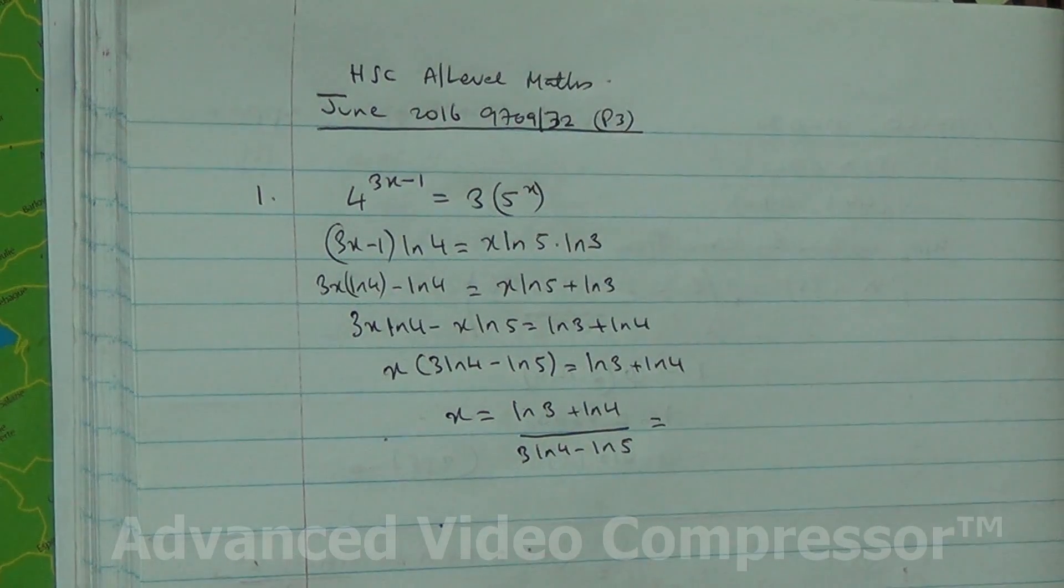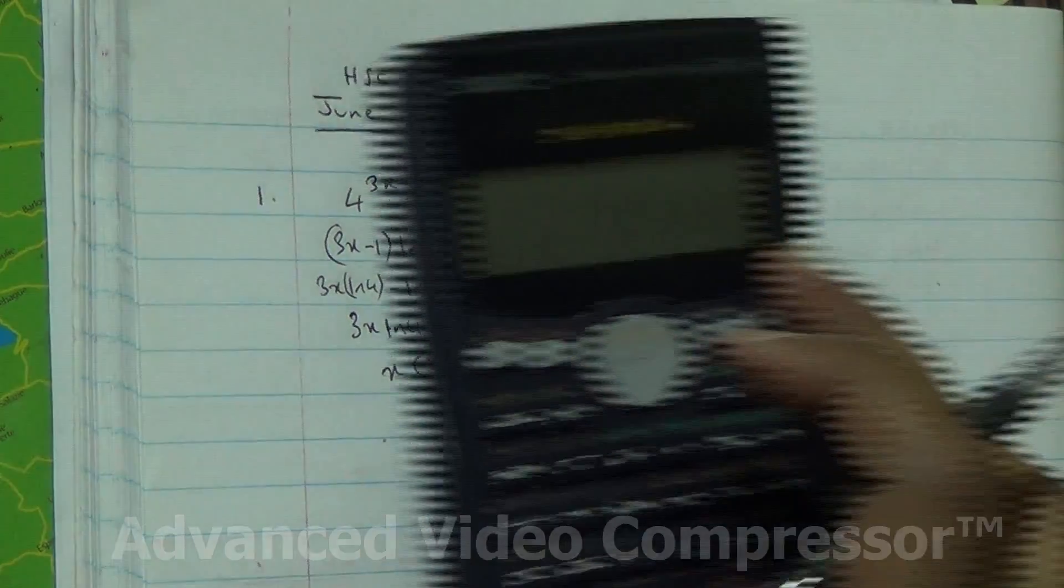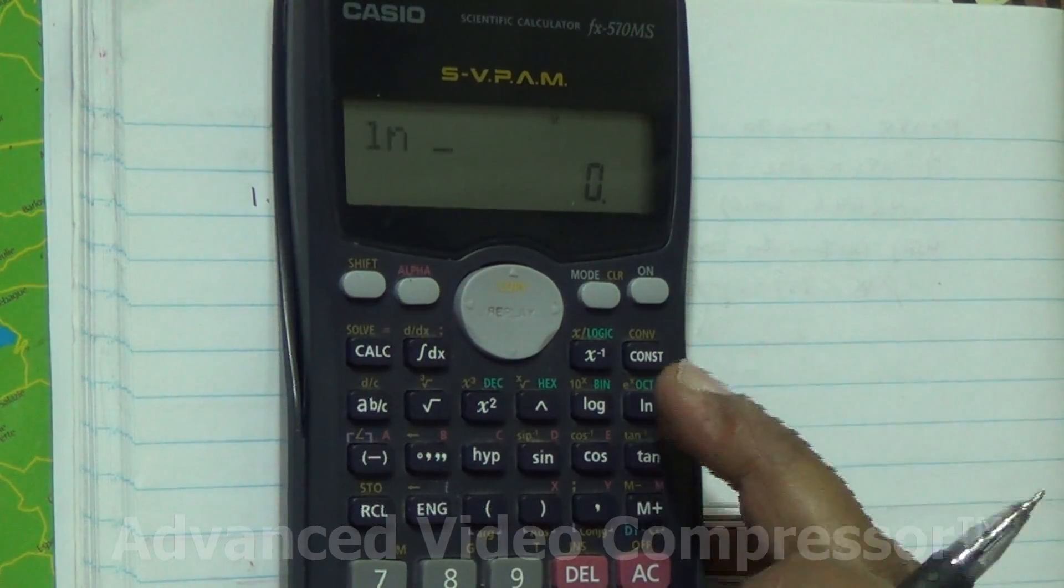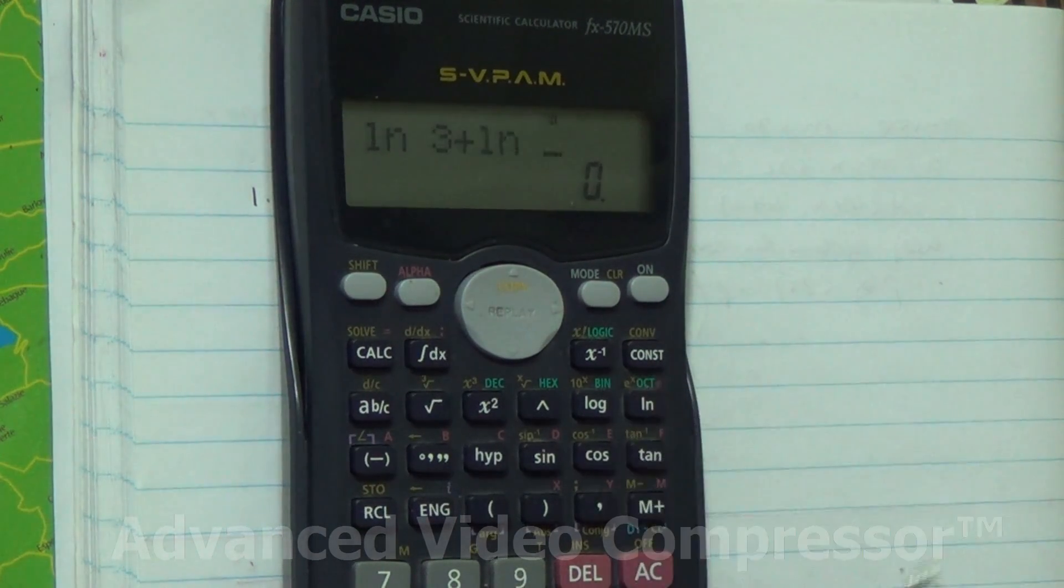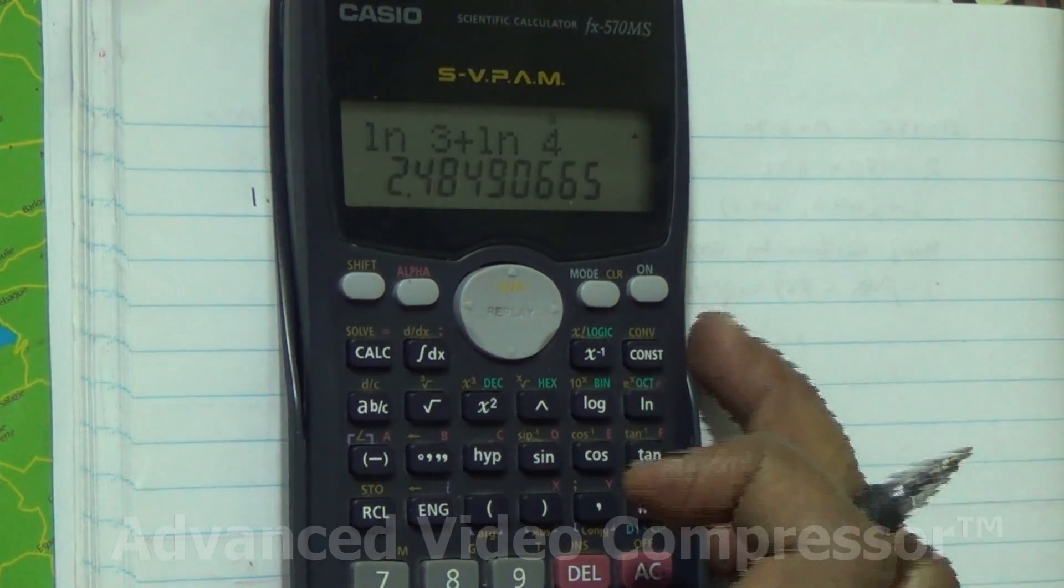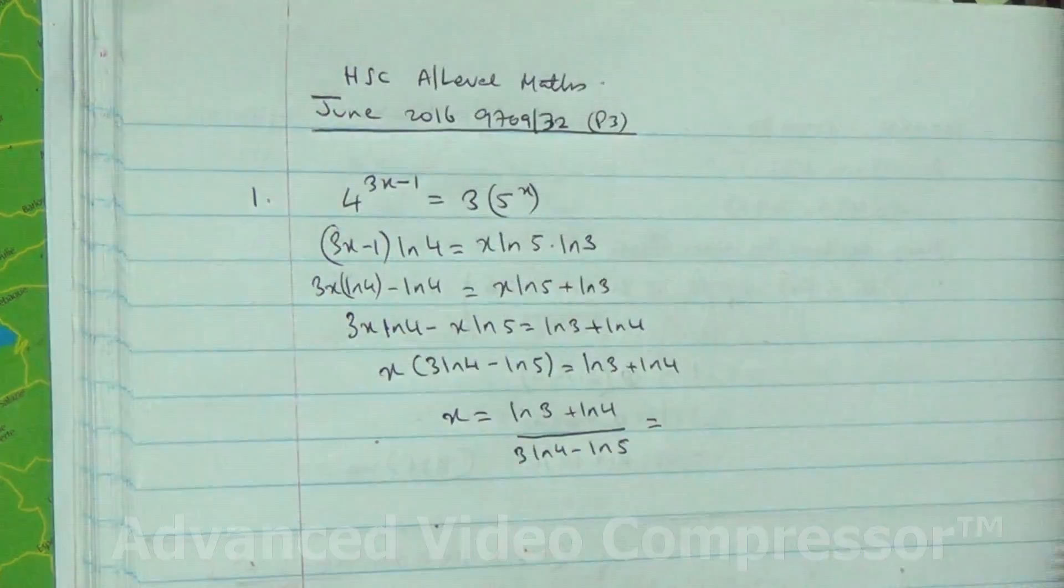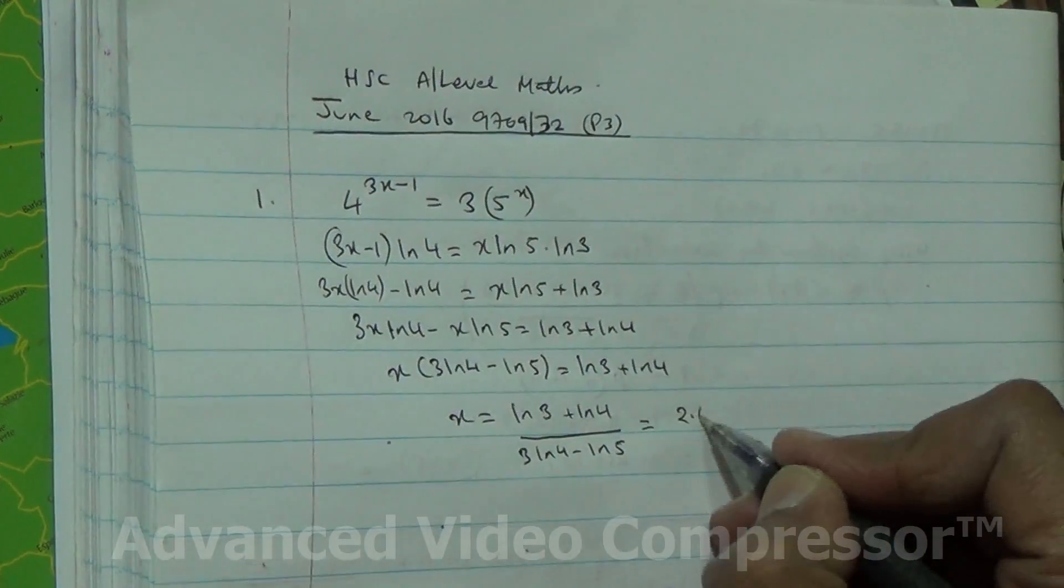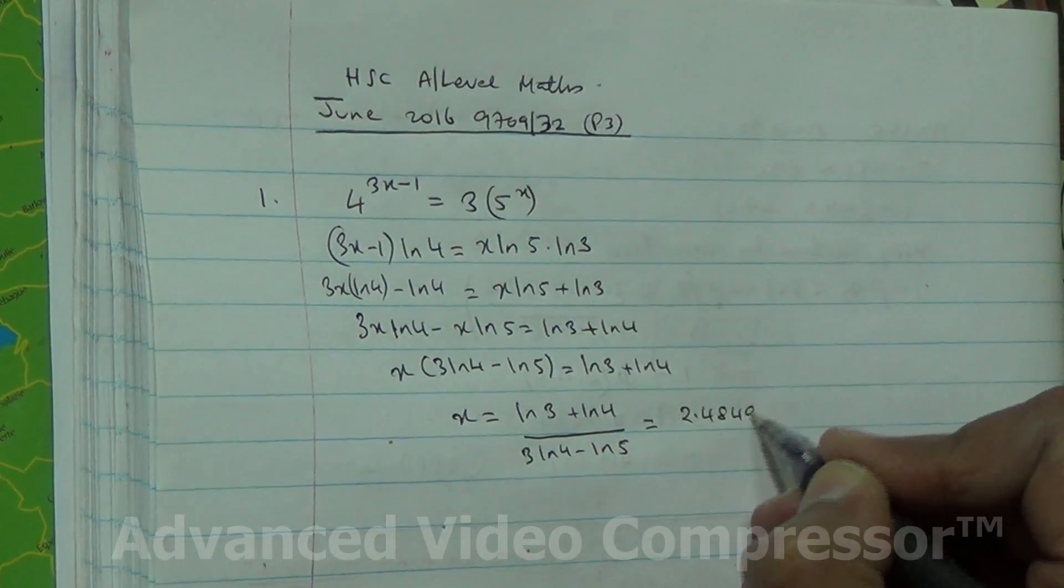So let's do it on our calculator. ln 3 plus ln 4... 2.4849 something.